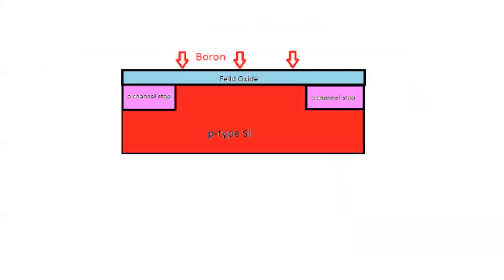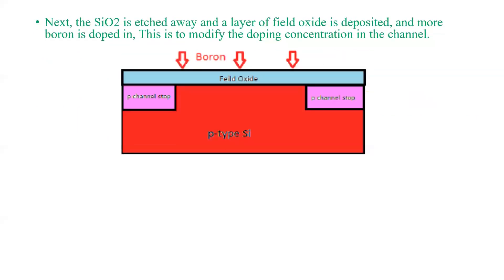The next step is that the SiO₂ will be etched off. When we remove the SiO₂, a layer of field oxide is deposited and more boron is doped in — you can see three arrows here. This is done to modify the doping concentration in the channel region.